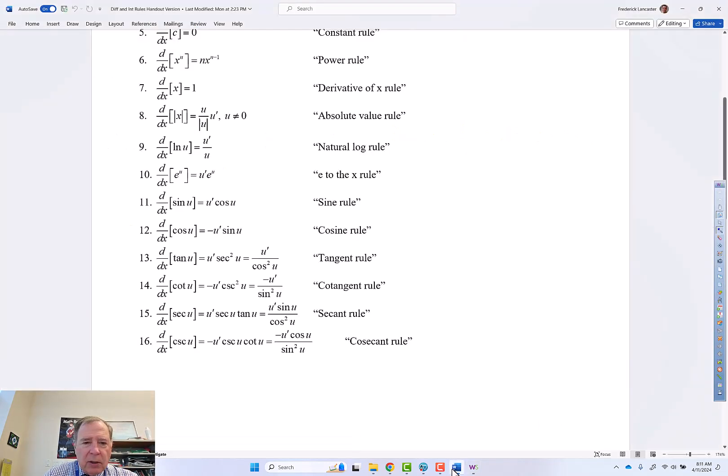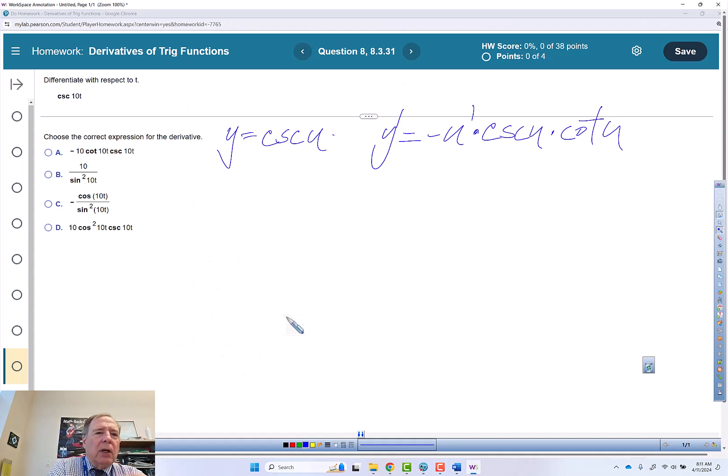I'm going to check that. Cosecant of u cotangent of u. Then u is 10t, so u prime is 10.